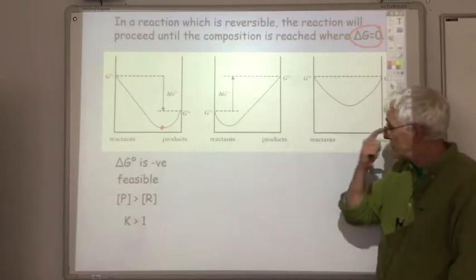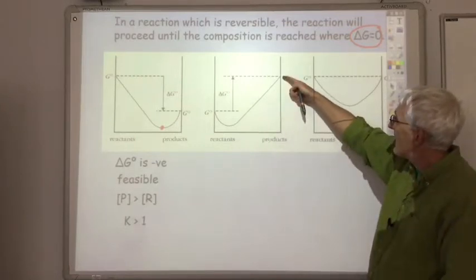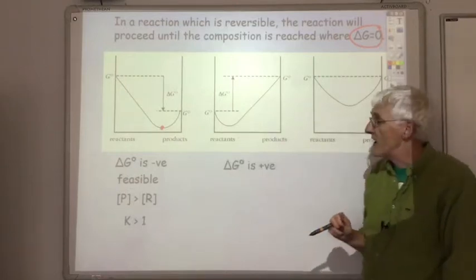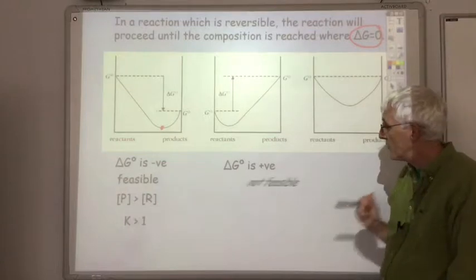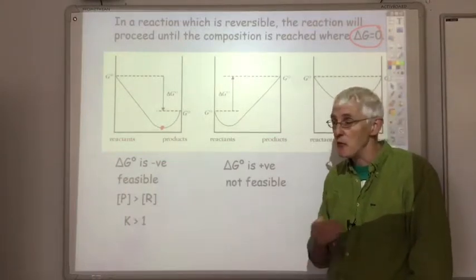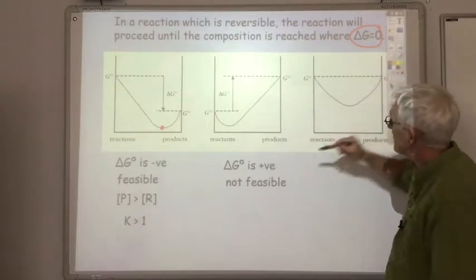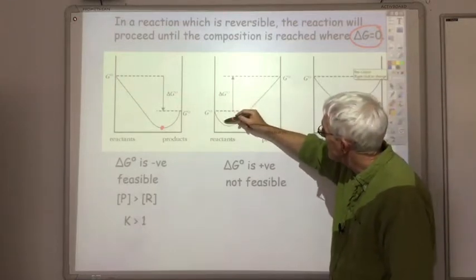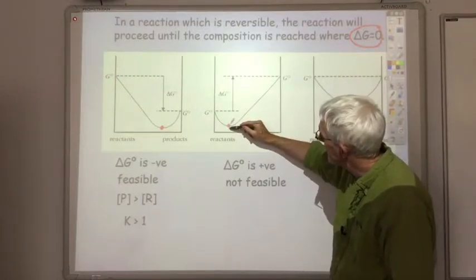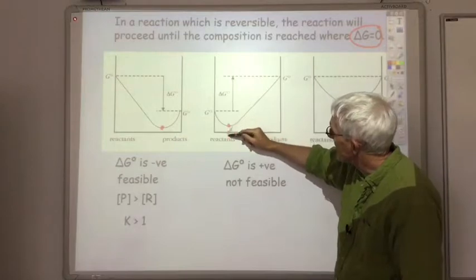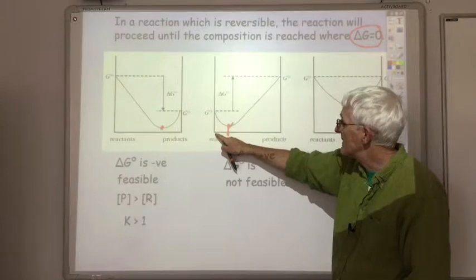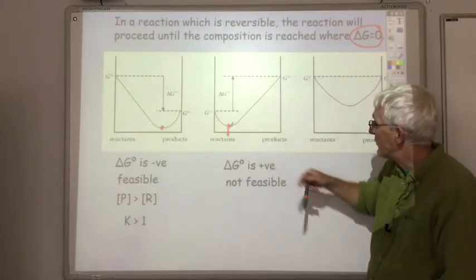In the next situation, the products have more free energy than the reactants, so delta G for this reaction is positive — the reaction is not feasible. But because it's an equilibrium, that does not mean it will not proceed at all. It will proceed until G stops changing, which is at a point where you have a high concentration of reactants and not very many products.